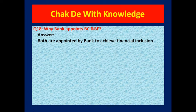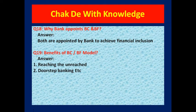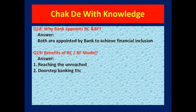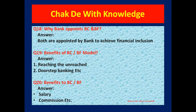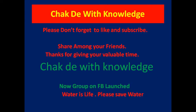Both BC and BF are appointed for the purpose of financial inclusion. The benefits of the BC and BF model include reaching the unreached — meaning those people who don't have access to banking channels, for whom the branch is far away, can contact BC or BF to open their account or get financial products. Second benefit is doorstep banking, where BC or BF will reach your door and open accounts or provide financial services. Additionally, BC and BF benefit by receiving sales incentives and commissions from the banks based on accounts opened and transactions made.